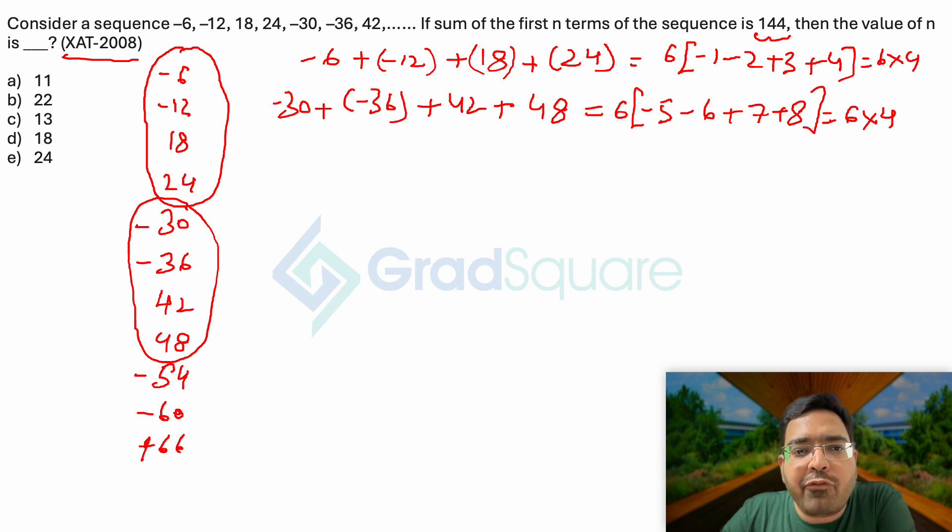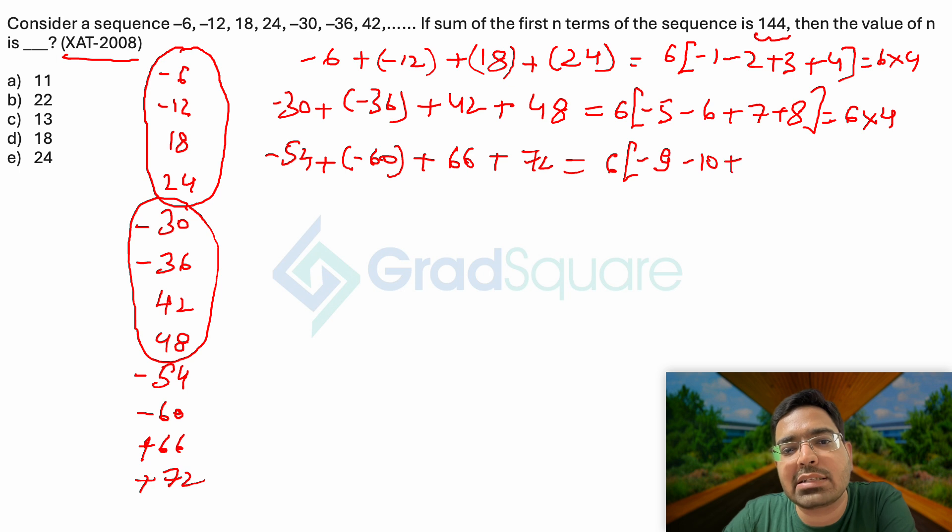Going forward, let me do it one more time to see if this pattern is really following up. So I have minus 54 plus minus 60 plus 66 plus 72. If I follow this, I am going to take 6 common, and this is going to be minus 9, minus 10, plus 11, and plus 12.